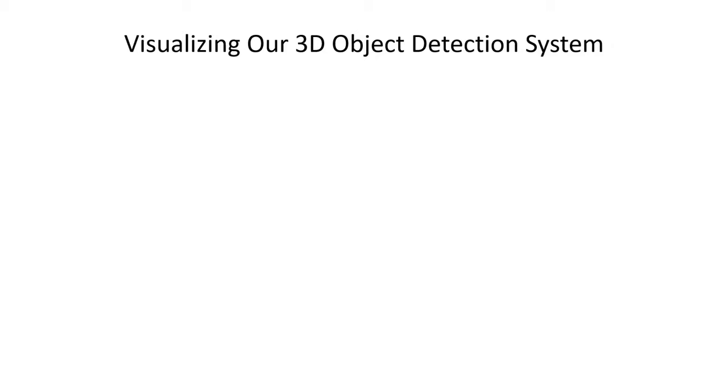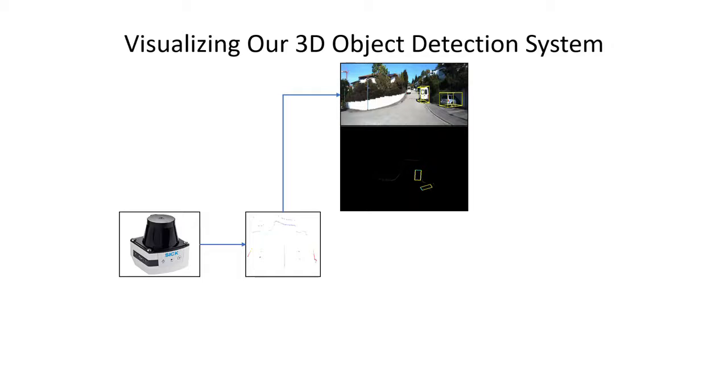We use the image data and single-beam 2D LIDAR data for 3D object detection. We do this in two ways. First, we use only the single-beam 2D LIDAR data to implement our 3D object detection network.